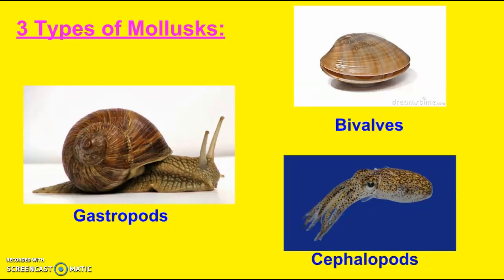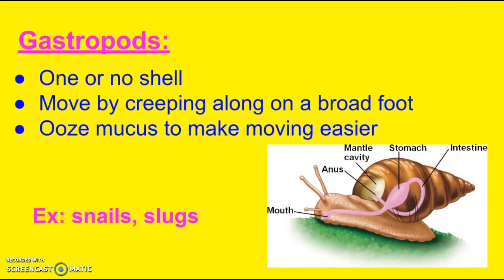There are three types of mollusks: gastropods, bivalves, and cephalopods. Gastropods have one or no shell — these are going to be your snails and your slugs. They move by creeping along on a broad foot. If you've ever seen a snail early in the morning walking along your driveway, you usually see a slime trail, which is just mucus that helps make it easier for them to move.